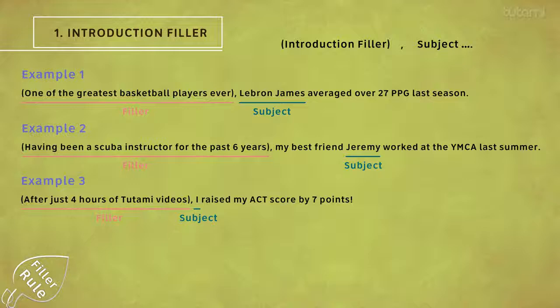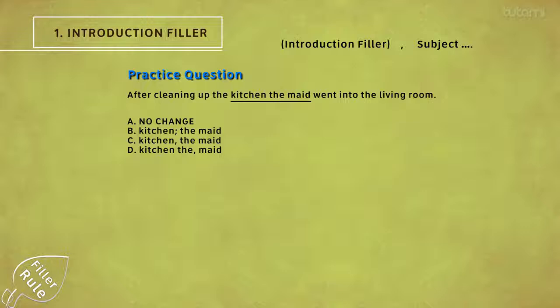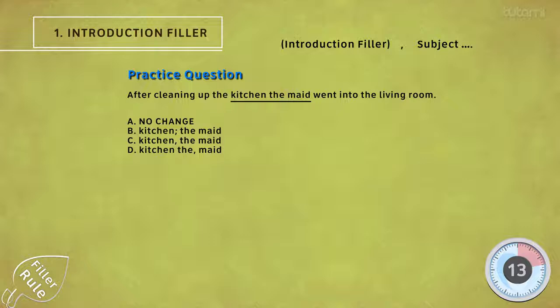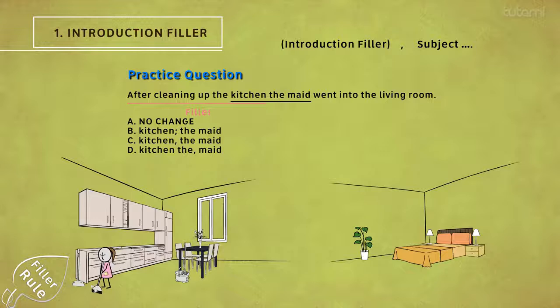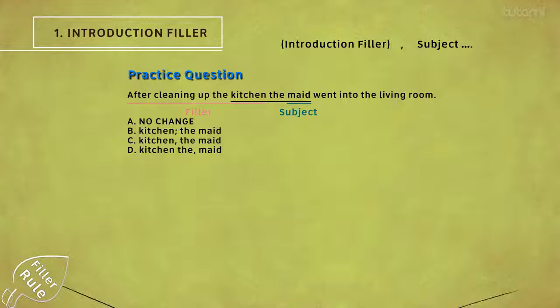As you can see in each of these situations, the filler shows up in the introduction or beginning portion, and it sounds like an incomplete descriptive phrase which is actually describing the subject just around the corner. Looking at a sample question now, we have a descriptive filler in the first half: 'After cleaning up the kitchen.' After who cleaned up the kitchen? The subject that follows the descriptive filler. Hence, we need a single comma to separate the filler from the subject, making C our answer.